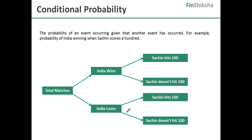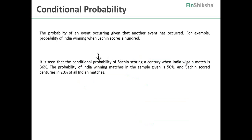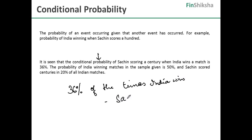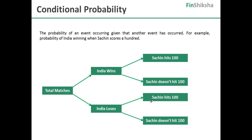What has been given to us is the conditional probability of Sachin scoring a century when India wins is 36%. So when India wins, 36% of those matches Sachin scores 100. Out of all of India's wins, 36% of the times you have a Sachin century. Let's assume that the total number of matches is 100. Our task is to first create this tree. Once you have created this tree, you can practically answer any question about it.